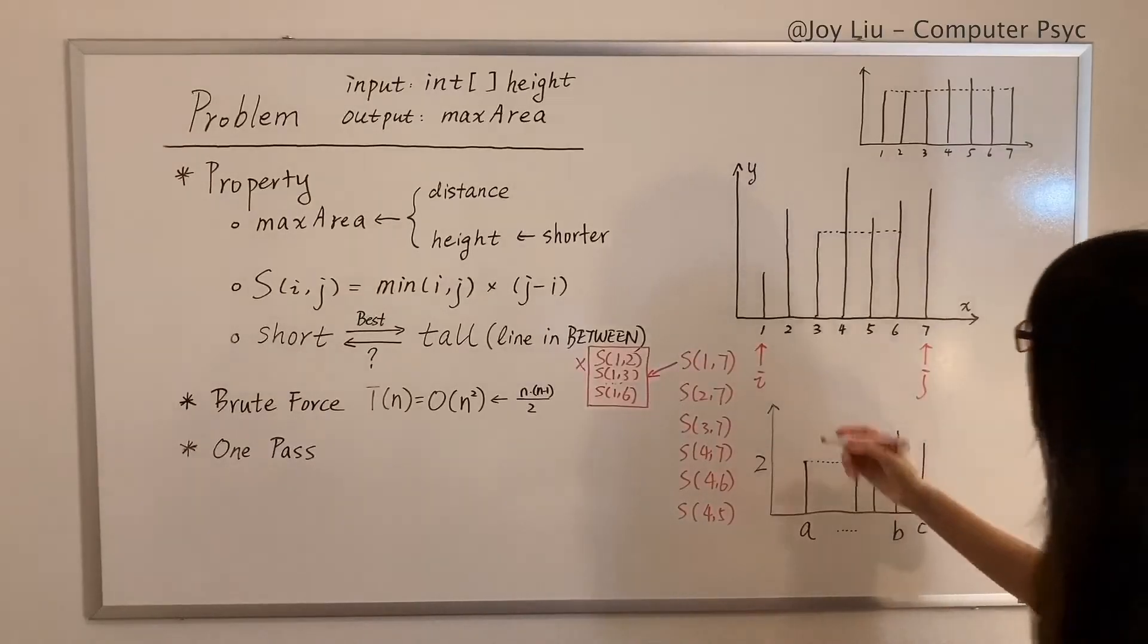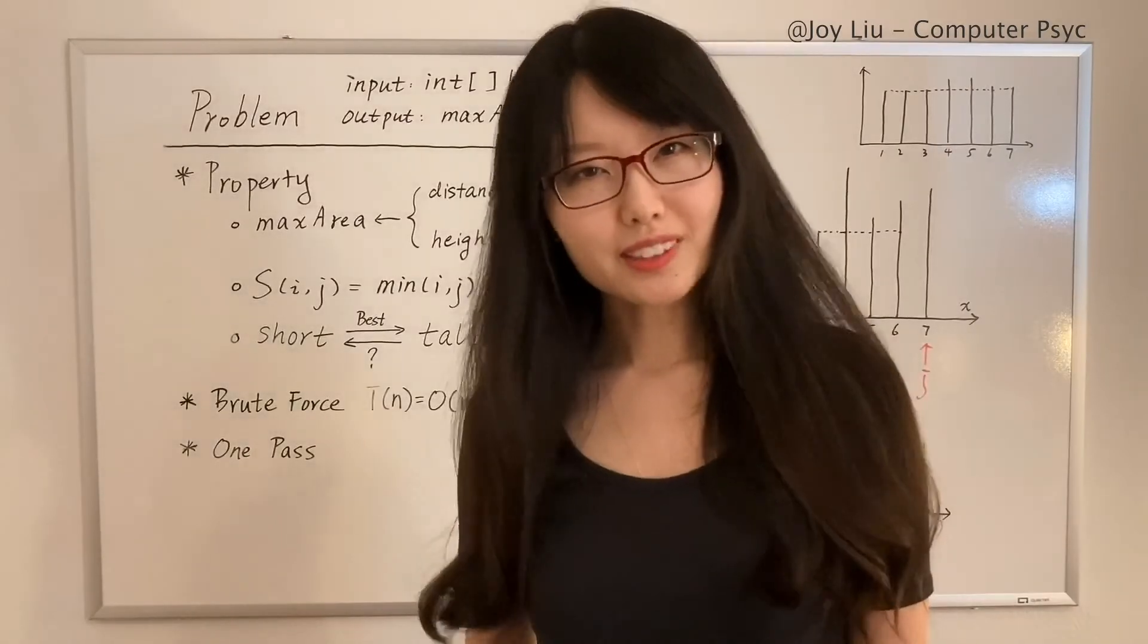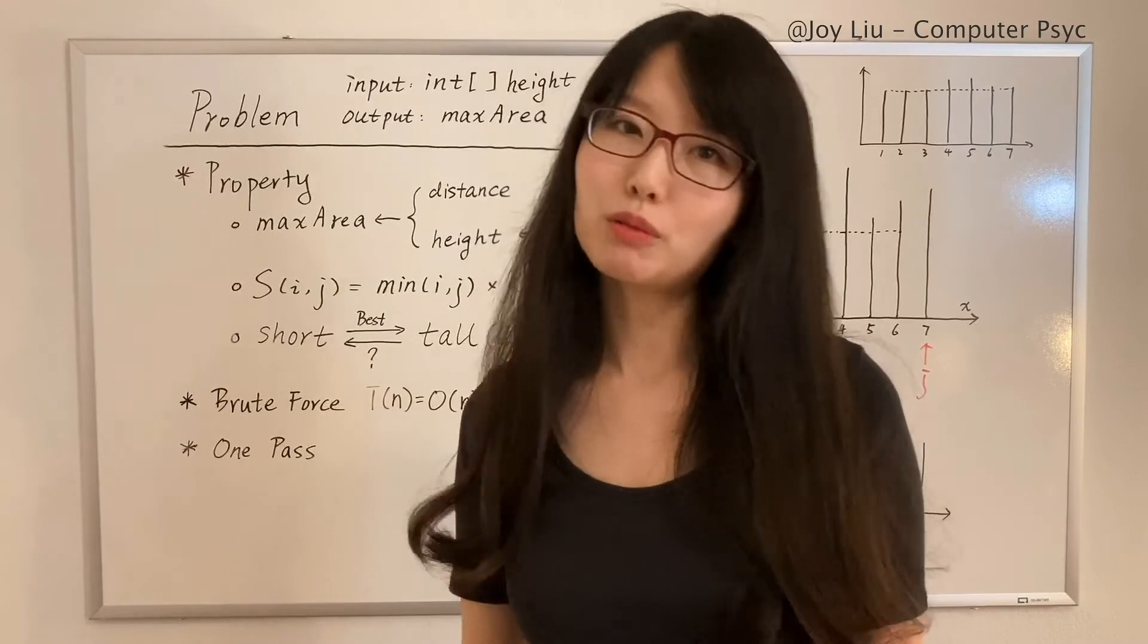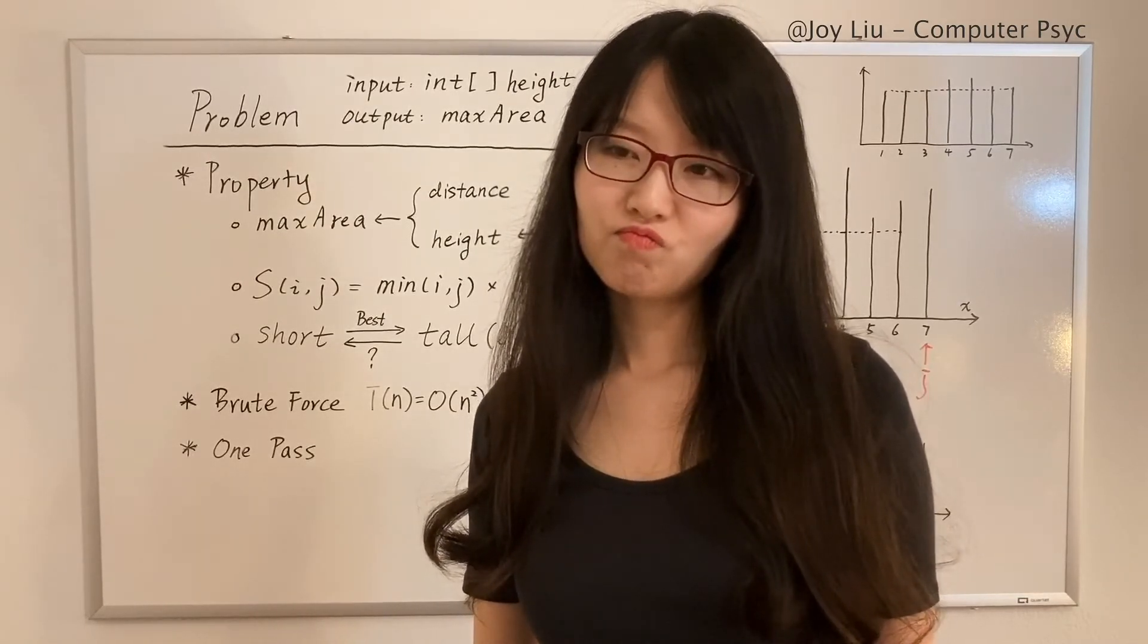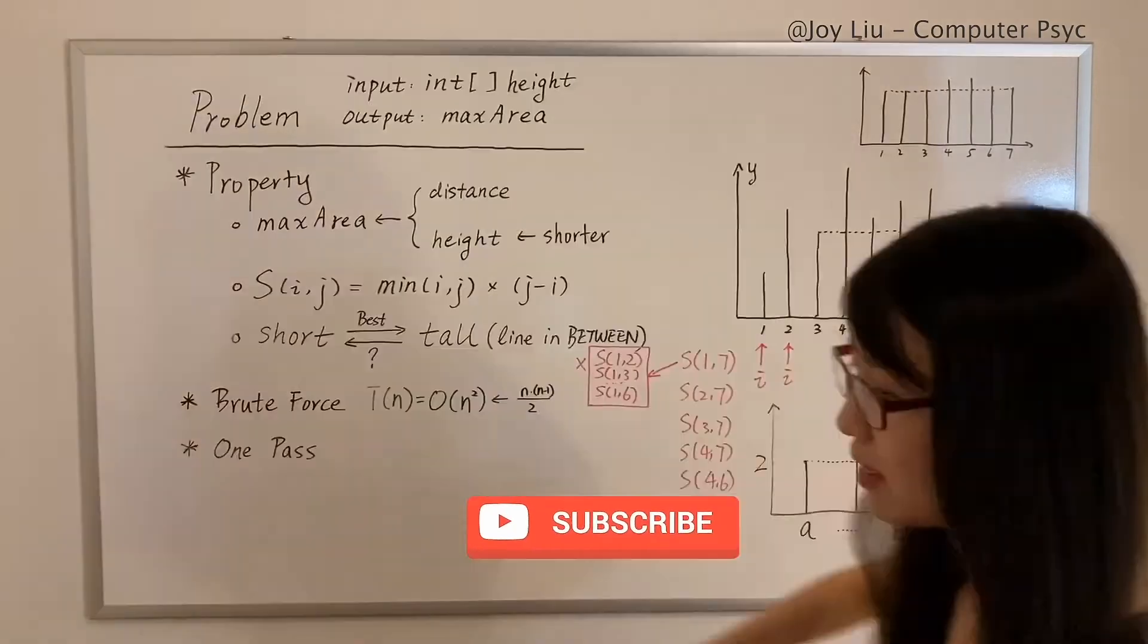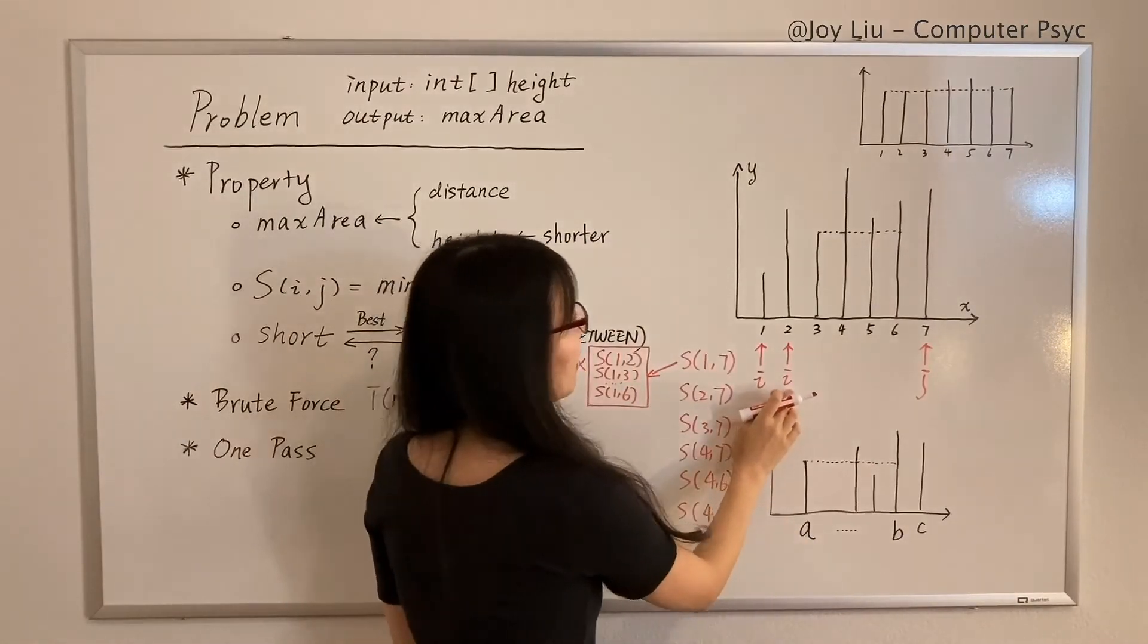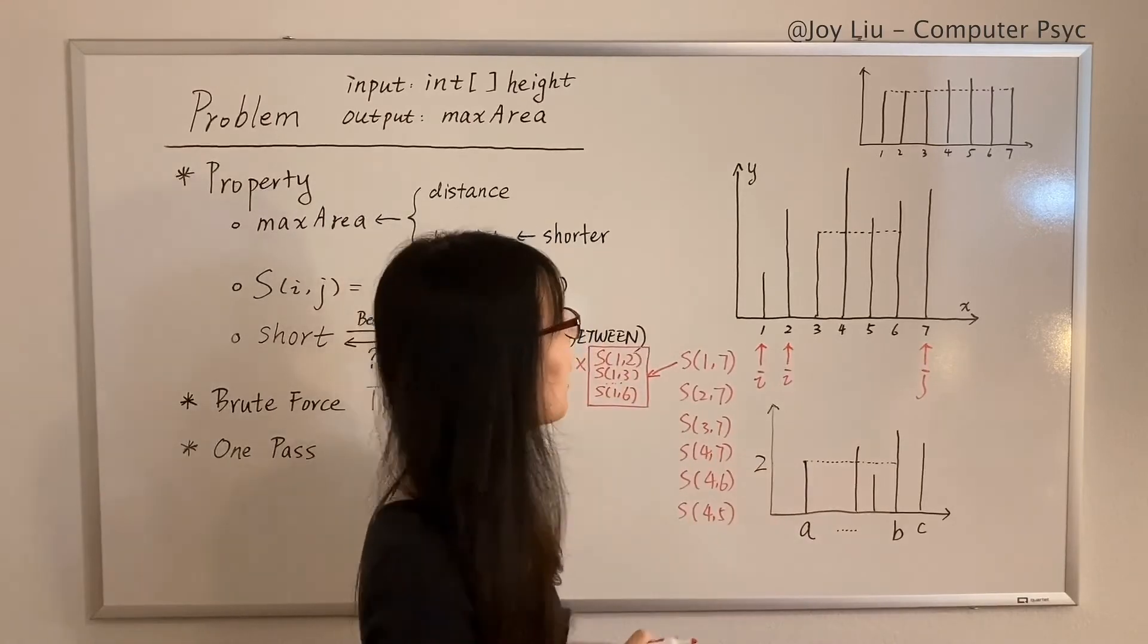So from the perspective of one, these containers are not necessary because (1,7) must beat all of them. However, from the perspective of seven, one may not be seven's best choice. It's possible that seven will form larger containers with lines in between, so seven still needs to search. Therefore we move i, not j. It's like when you're dating someone—you're pretty much sure that this person is a Mr. Right or Mrs. Right, but this person is like, 'Um, I don't wanna settle down right now.' All right, no problem.